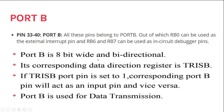Port B is for data transmission. RB6 and RB7 can be used for in-circuit debugging pins, and RB0 can be used as an external interrupt pin. In-circuit debugging means you connect the hardware and software together, set breakpoints and watchpoints, stop execution at a particular point, and analyze register values and memory values to debug.